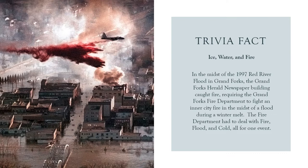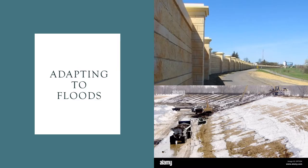During the height of the 1997 flood in Grand Forks, North Dakota, when the fire department was sandbagging the river and evacuating people from low-lying areas, the Grand Forks Herald newspaper office caught fire. So in the middle of a flood, the department had to fight a fire, even calling in a fire retardant aerial bomber to help contain the flames. What city used an aerial retardant drop to fight a fire in the middle of a flood? Grand Forks, North Dakota.